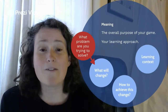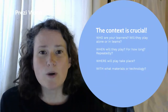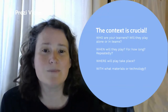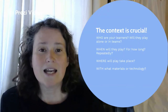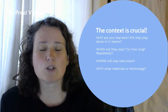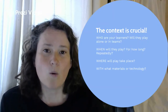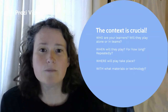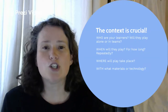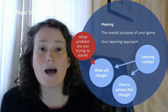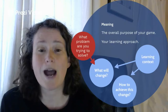Our learning context affects both of these things. Learning context is absolutely crucial. Who are your learners? How old are they? Who are they playing with — by themselves, in teams, with their parents, with their friends? When are they playing this game and for how long? Are they playing repeatedly, coming back to the game multiple times, or is it going to be played just once? Where does the gameplay take place — on a bus using a mobile phone, or in a classroom? And finally, what materials or technology do you need to deliver the gameplay? All of these things absolutely inform both what is going to change and how you're going to achieve it.